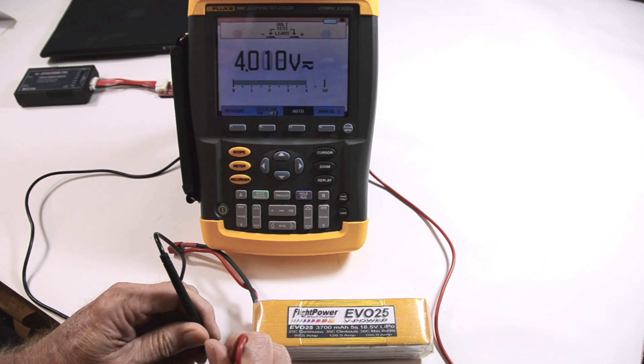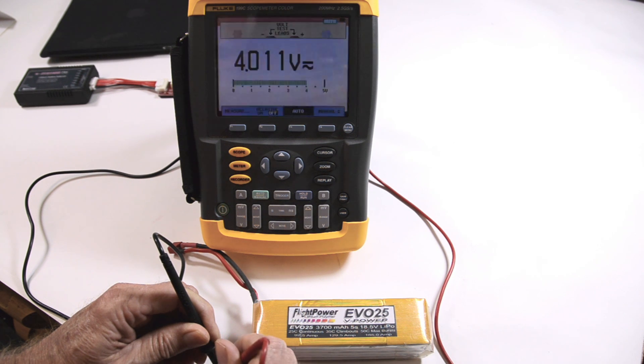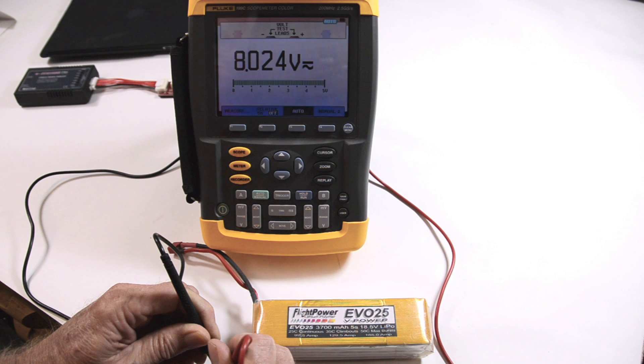So the first cell is 4.01 volts and the second cell, we'll take that and subtract 4.01, that makes it 4.01.